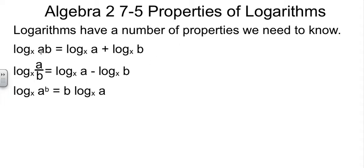The first property that we really need to worry about is the product property. When you have a log of a product, you can take that apart as the sum of two separate logs. So log of ab would equal log of a plus log of b. Notice we kept the same base x all the way through. A product inside the log becomes a sum on the outside of the log.